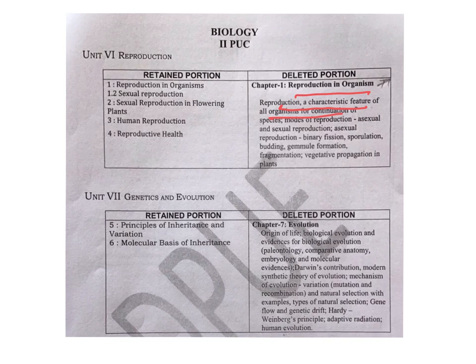The modes of reproduction — asexual reproduction and sexual reproduction — are removed. In asexual reproduction, binary fission, sporulation, budding, gemmule formation, fragmentation, and vegetative propagation in plants — these portions are deleted.